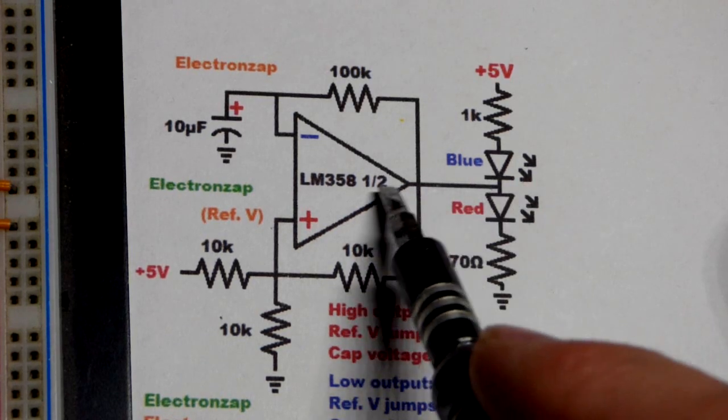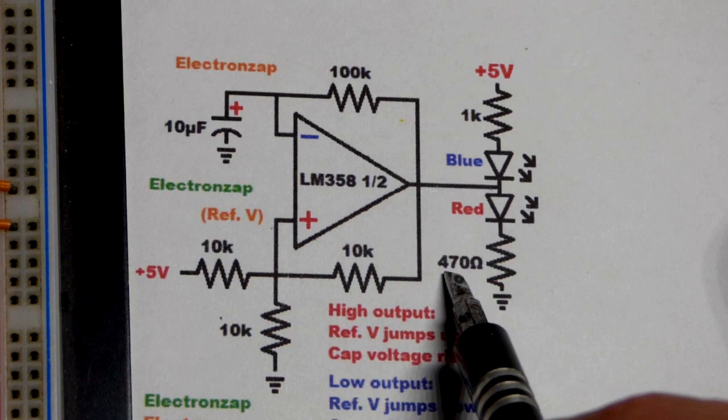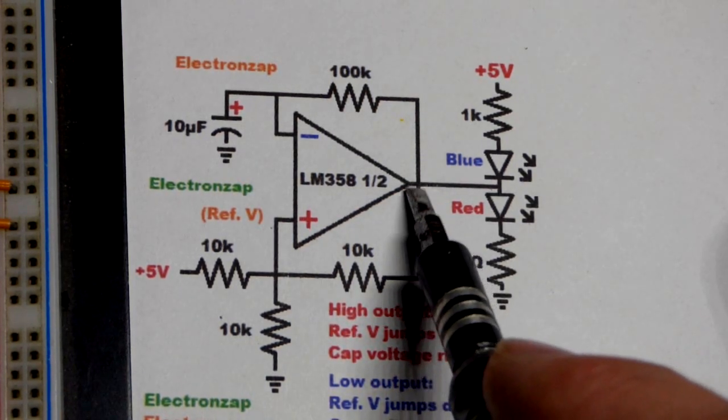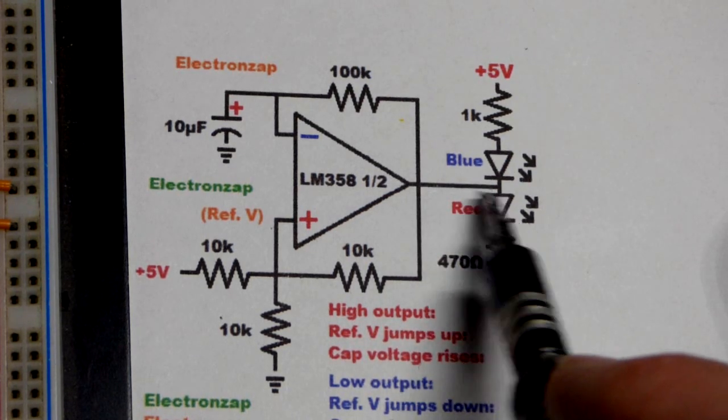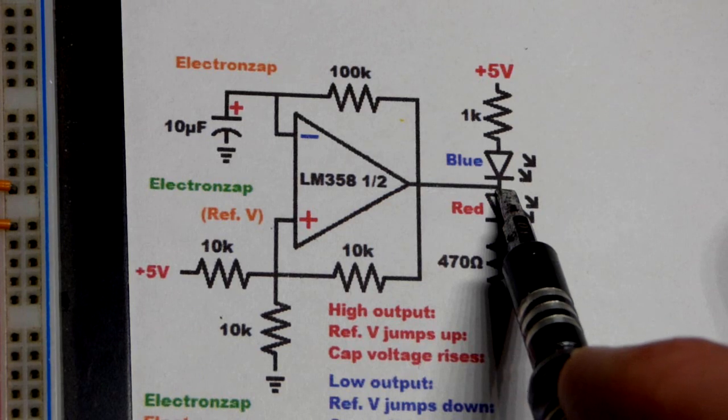For demonstration purposes so we can see the high and low, we have a red and a blue LED. They draw current. The op-amp output is limited in how much power it can provide, so I used a bit higher resistor here to keep the demands of the output low.